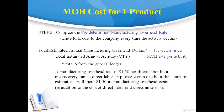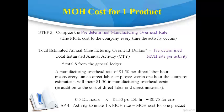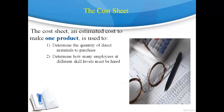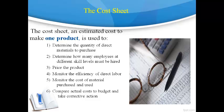Remember, the manufacturing overhead cost for one product is only an estimate because the costs of the facility and management are incurred to make all products, and it is impossible to physically determine how much of these costs is required to make just one. The cost sheet is an estimate of the cost to make one product or provide one service. It is used to determine the quantity of direct materials to purchase and the number of direct labor employees to hire. The cost to make each product must be known to profitably establish a selling price. Estimated quantities and costs on the cost sheet are compared to actual quantities and amounts paid to monitor efficiencies and prevent cost overruns. The estimated cost to make one product is also used to estimate cost of goods sold on a budget income statement.